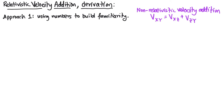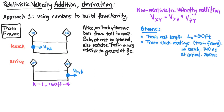Now let me introduce the problem we'll be working with. Recall when we talked about the non-relativistic velocity addition formula, we had Alice on a train throwing a baseball and Bob on the ground measuring the speed of that baseball. We're going to do exactly the same problem, except now we'll be dealing with high speeds. So we need to account for relativistic effects like time dilation, length contraction, and the rear clock set ahead. The train is at rest in the train frame, and we show the launch and arrival snapshot diagrams. The train moves relative to the ground at three-fifths c.